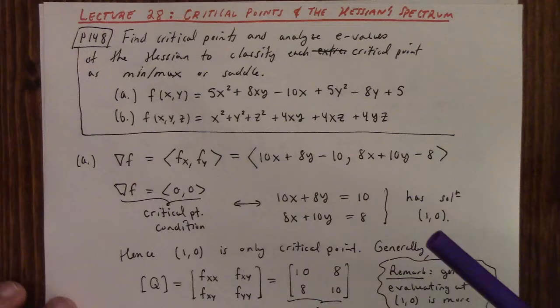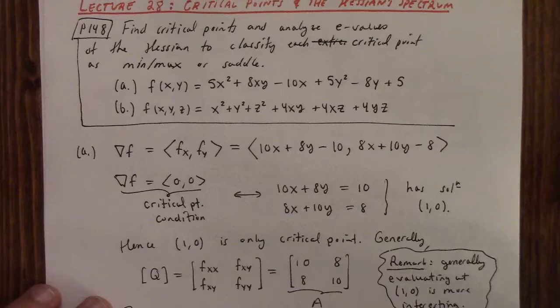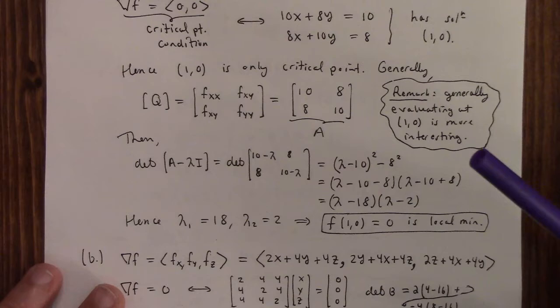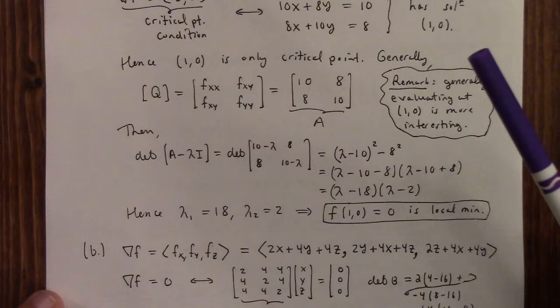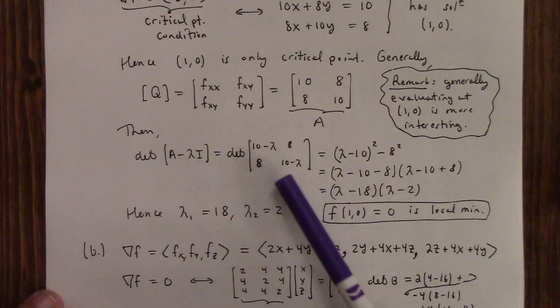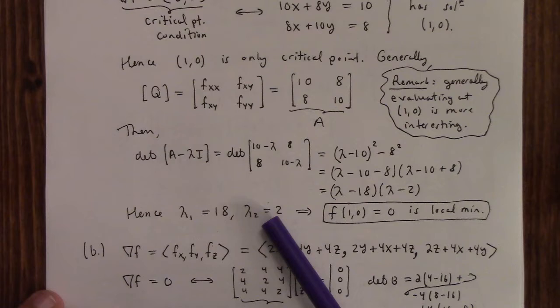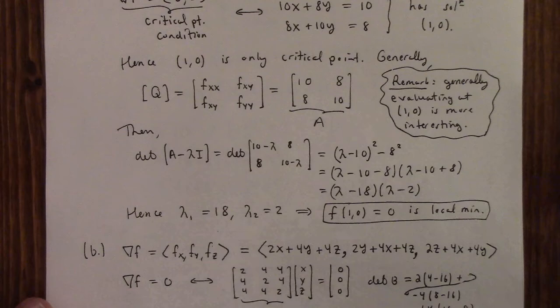Now the Hessian here, or the matrix of second derivatives, is F_XX, F_XY, F_XY, F_YY. Of course that's a symmetric matrix, right? And in this case it's 10, 8, 8, 10. So usually you actually have to plug in the point, but not this time. And the eigenvalues of this one end up being 2 and 18, so since they're both positive, that means that f(1,0) is a local minimum.